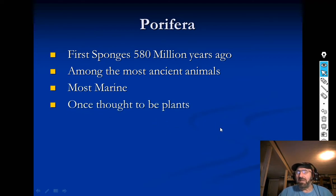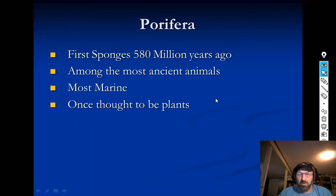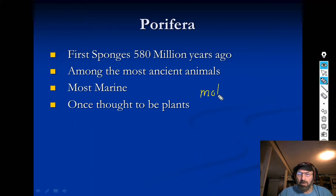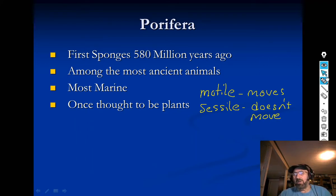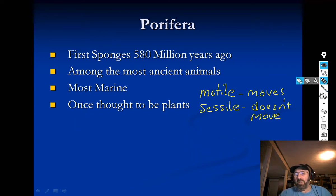Sponges were once thought to be plants because they don't move. When you think about an animal, you think it's got to move — but they don't have to. Another word for movement is 'motile' — it moves. And 'sessile' means it doesn't move; it stays where it is all the time. Think about a barnacle or coral — they don't move from place to place. All sponges are sessile.